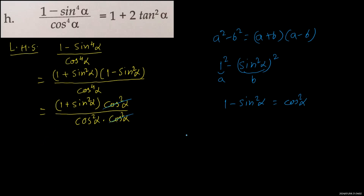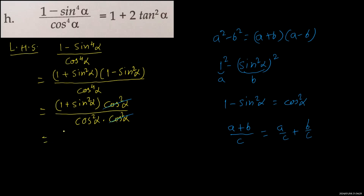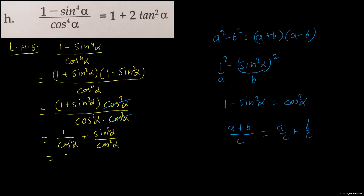Now, since if there is (a plus b) divided by c, it can be written as a/c plus b/c. Here, 1 plus sin square alpha upon cos square alpha can also be separated, and we can write 1 upon cos square alpha plus sin square alpha upon cos square alpha. And 1 upon cos square alpha can be written as sec square alpha, and sin square alpha upon cos square alpha is tan square alpha.